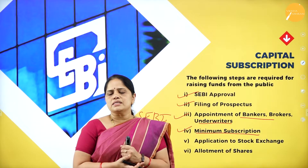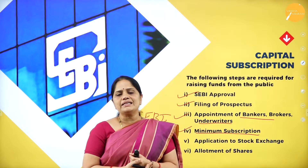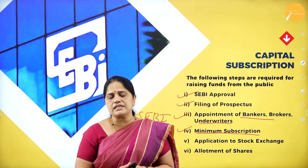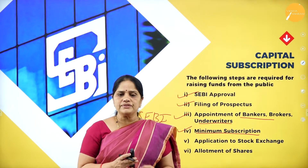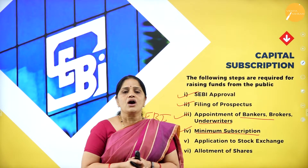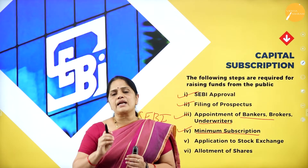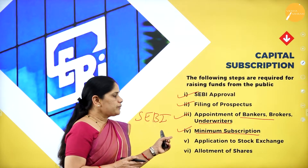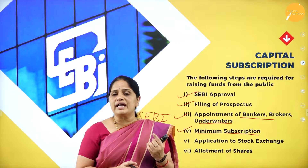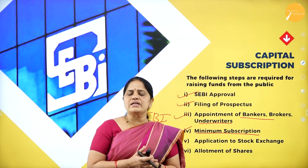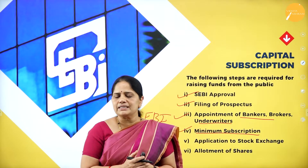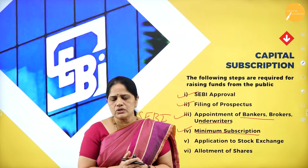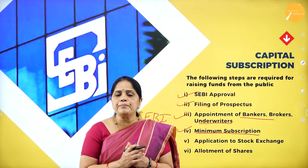The next important step is to get the minimum subscription. To prevent companies from starting business with inadequate resources, the Registrar of Companies has made it mandatory for all companies to get minimum subscription of shares. Almost 90% of the issue should be subscribed by the public — this is the specified number given by the Registrar of Companies. If less than 90% is subscribed, the company cannot go ahead with allotment and must return whatever application money it has collected from the shareholders.